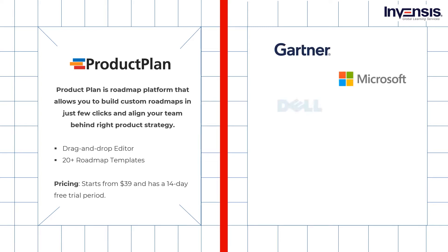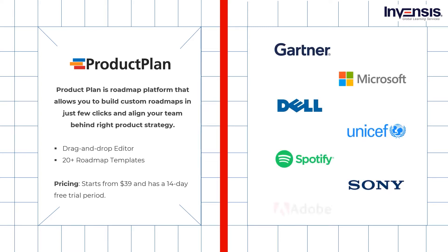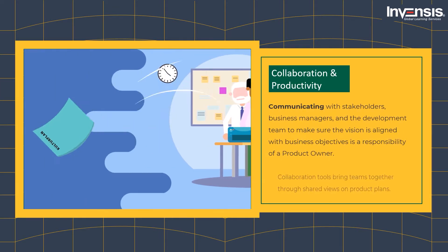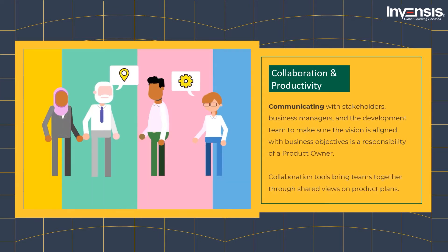Thousands of companies around the world such as Microsoft, Gartner, HubSpot, and Spotify are using Product Plan as an enterprise roadmapping solution. Apart from these two, there are many other popular product roadmap softwares such as Monday.com, Aha, Pendu, Product Board, ProdPad, and others. The next category that we have is collaboration and productivity.